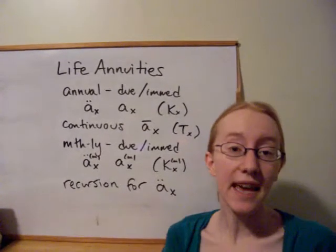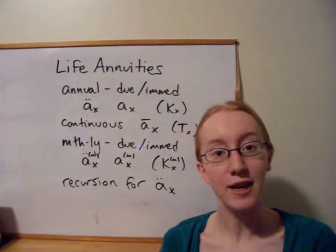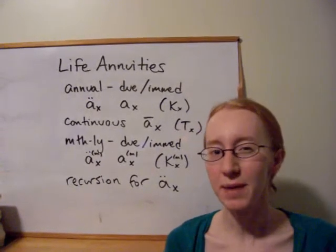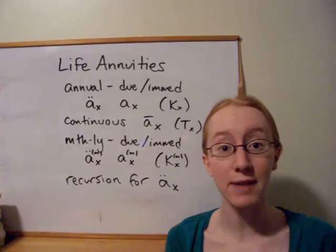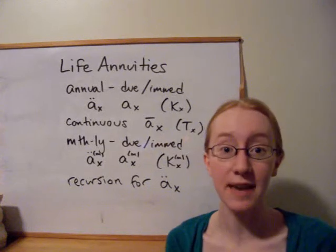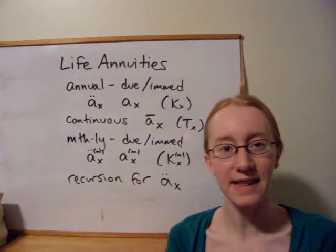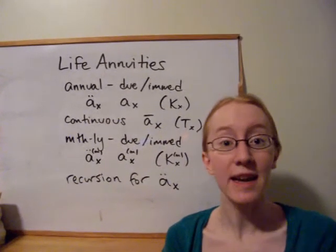In the continuous case, where we assume, again, $1 per year, but paid continuously throughout the year, we shift from caring about kx to actually the random variable tx, the entire lifetime of the person. Because even if they live part way through a year with this continuous payment, they are going to receive some of that payment for that year.